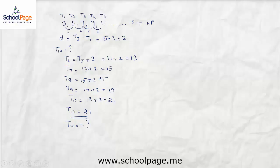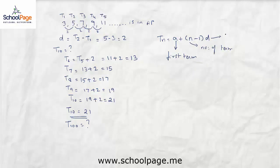To find the nth term, we use the formula: tn equals a plus (n minus 1) times d, where a is the first term, n is the number of terms, and d is the common difference.